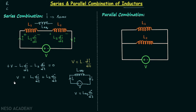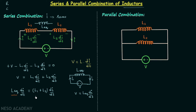We can say that voltage V equals L_eq·di/dt. Substituting, we have L_eq·di/dt equal to (L1 + L2)·di/dt. Comparing the left-hand side and right-hand side, we can see that L_equivalent is equal to L1 plus L2.